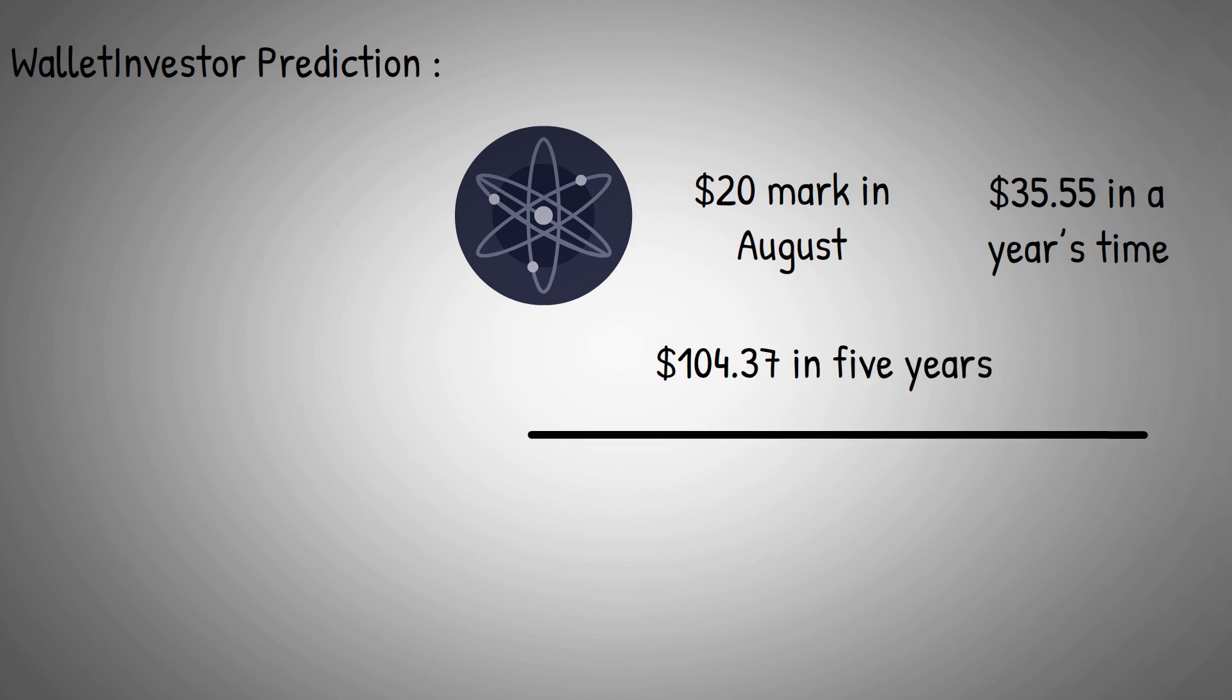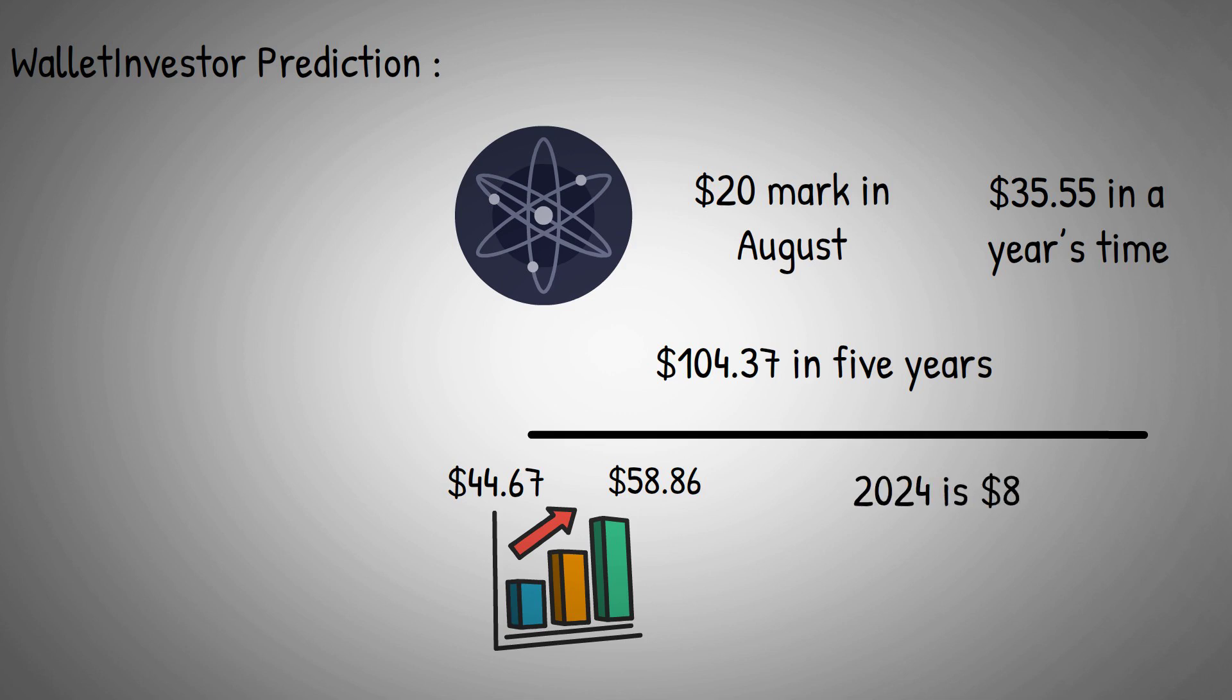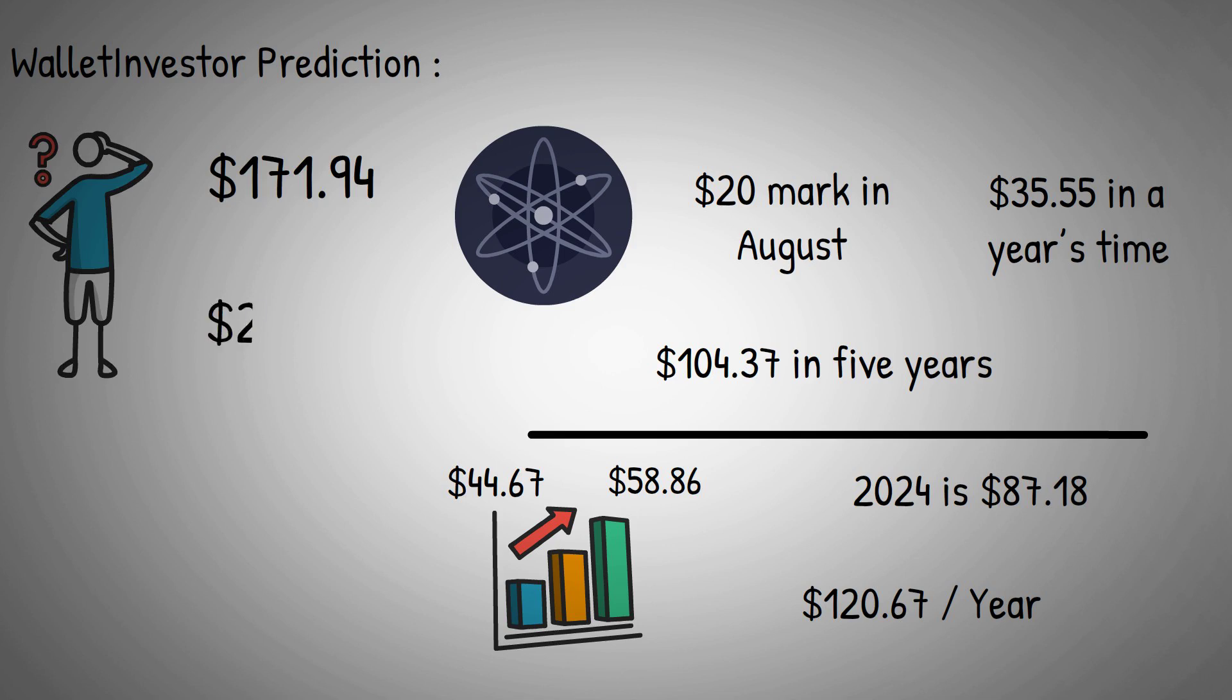PricePrediction.net says the maximum price in 2022 should be $44.67, while a year after that it should reach an average of around $58.86. The site's forecast for 2024 is $87.18, while 12 months from then it says it will be about $120.67. In 2026, it thinks the average price of Cosmos will be $171.94, and the following year, PricePrediction.net suggests it will be around $254.68.